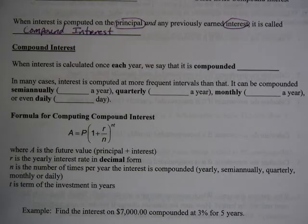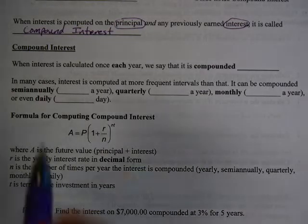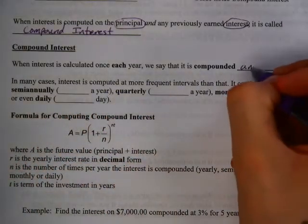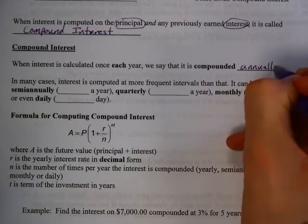When interest is calculated once each year, we say that it is compounded annually. That's just another word for every year.